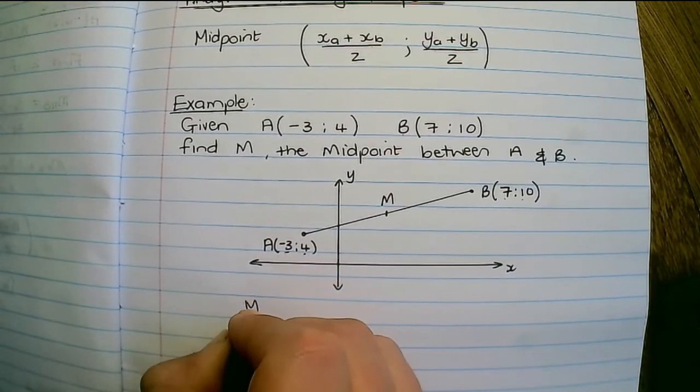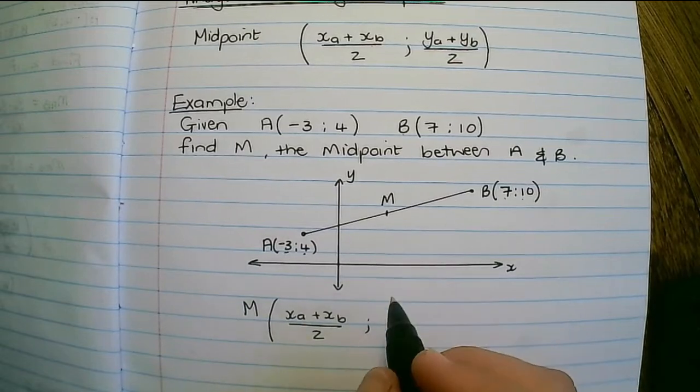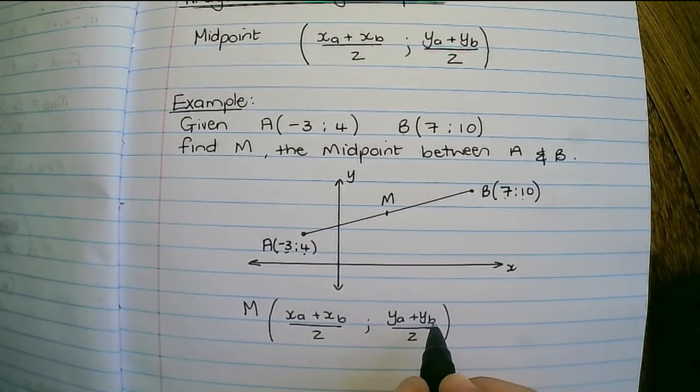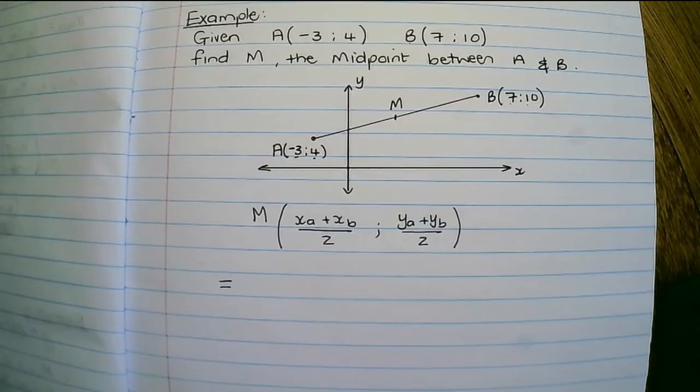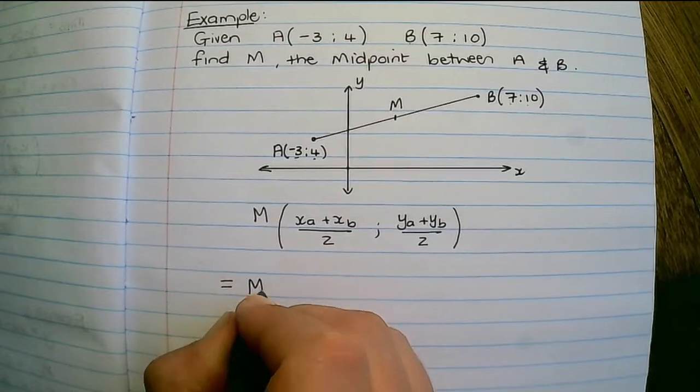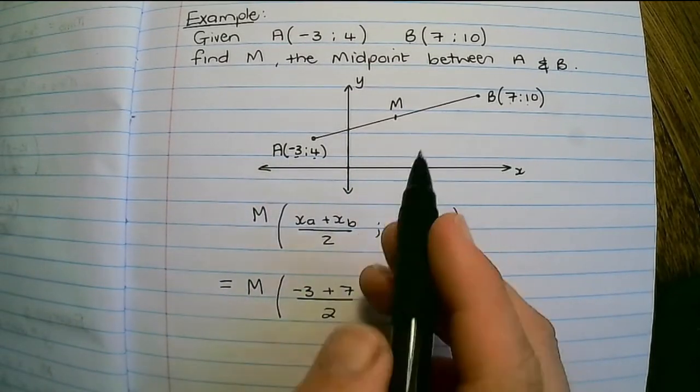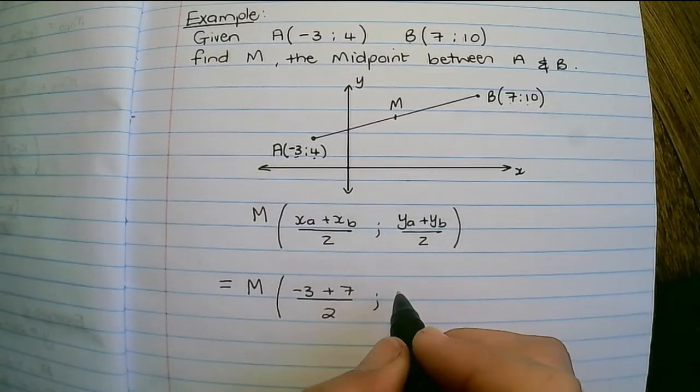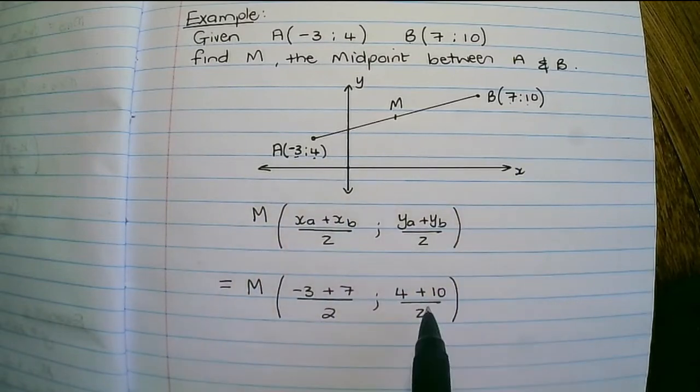So I can say M is the x of A plus the x of B over two, and the y of A plus the y of B divided by two. Now if I substitute, it's negative three plus seven divided by two, and for the y coordinate it is four plus ten divided by two.